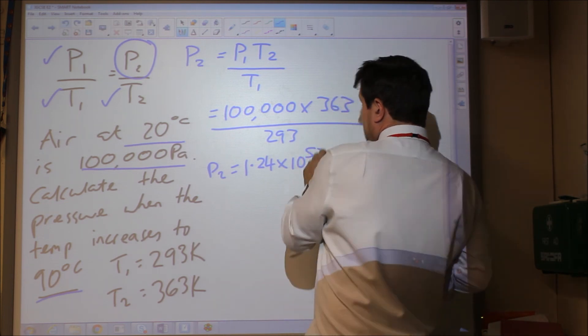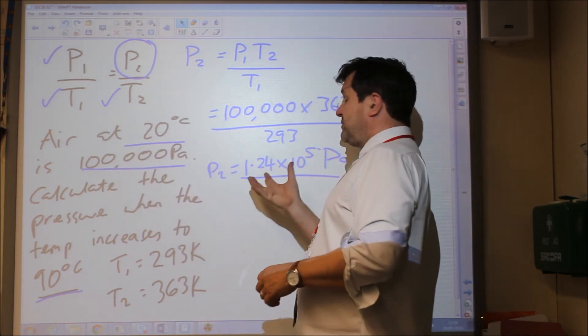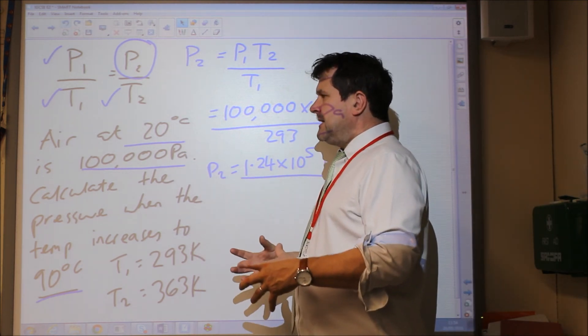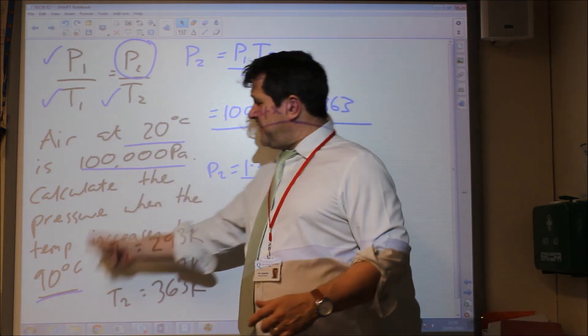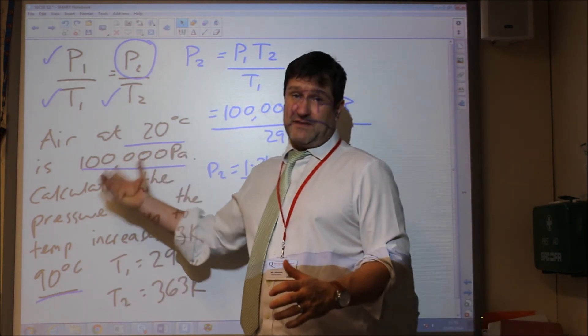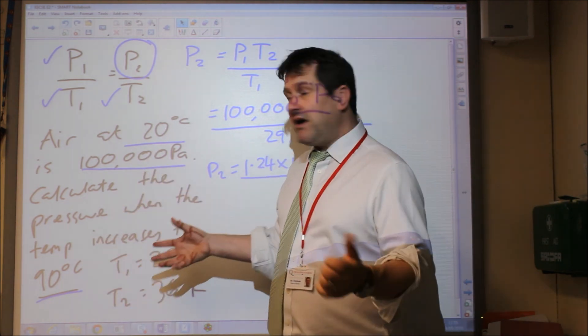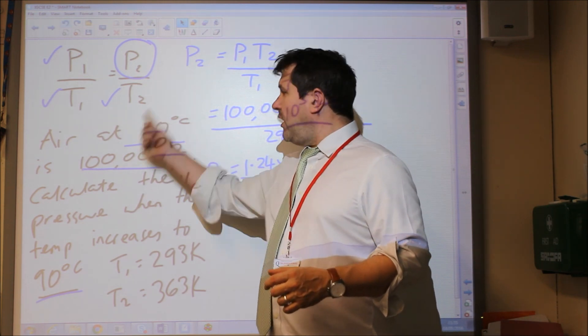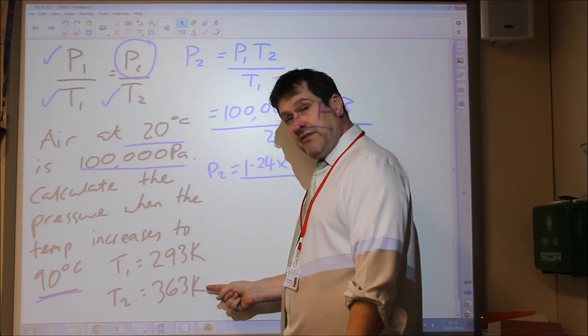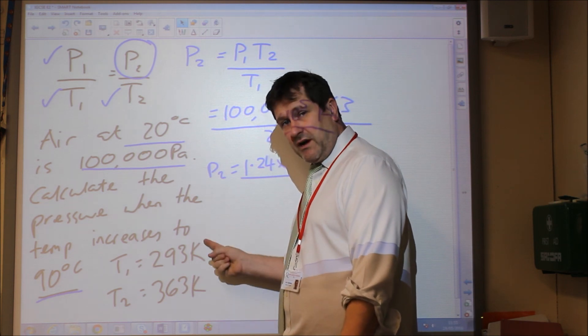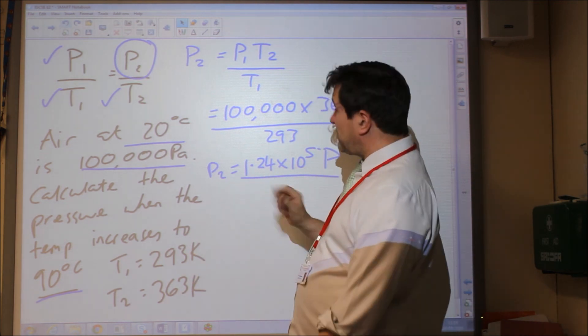When we look at this we say to ourselves is it realistic, and of course it is realistic because it's gone up from 100,000 to 124,000 pascals. You might say it's gone from 20 degrees C to 90 degrees C, and some people would say that's going up 4 and a half times, so we would expect a 4 and a half times increase in pressure to be 450,000. Why is that not the case? It's because 20 degrees C is not relative to absolute zero. We need to take it to absolute zero and say it's actually gone from 293 to 363, so we can see it hasn't gone up 4 and a half times at all. That relationship is why we've got it just going up by about 25%.